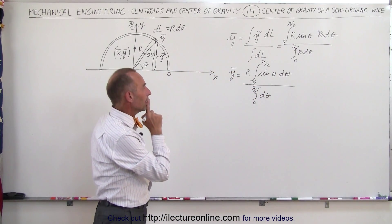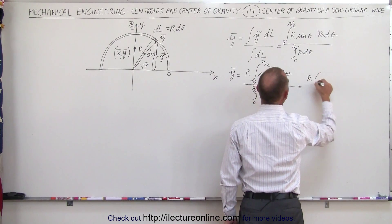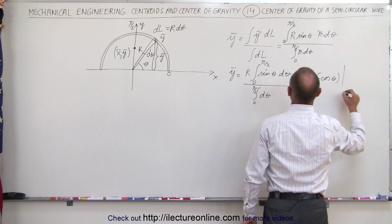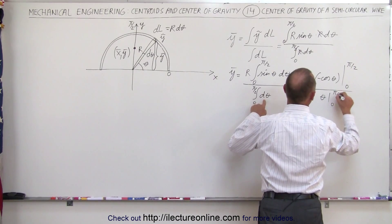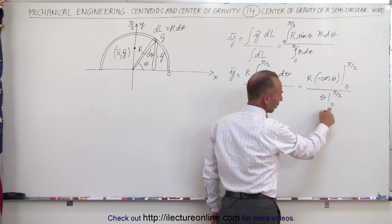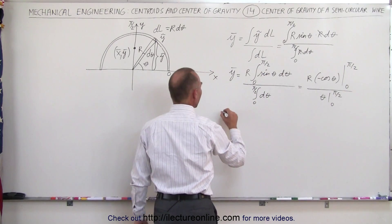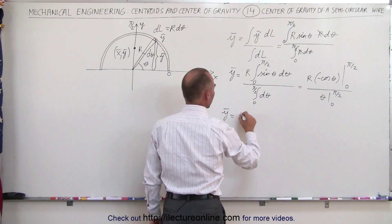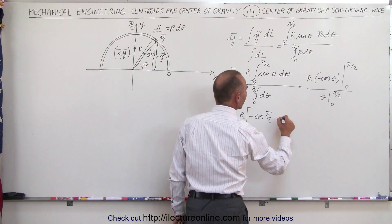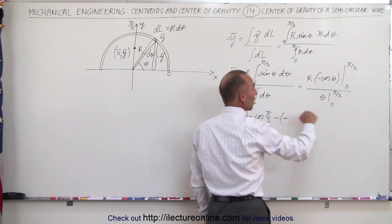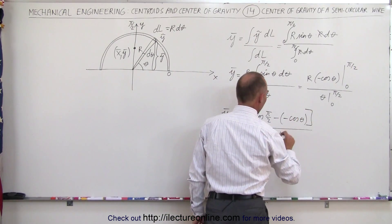Now we're ready to integrate. This equals r times the negative cosine of theta evaluated from 0 to pi over 2, divided by theta evaluated from 0 to pi over 2. In the denominator, plugging in the lower limit gives 0, so we only need the upper limit. In the numerator, we plug in both limits: minus the cosine of pi over 2, minus the negative cosine of 0. The whole thing is divided by pi over 2.